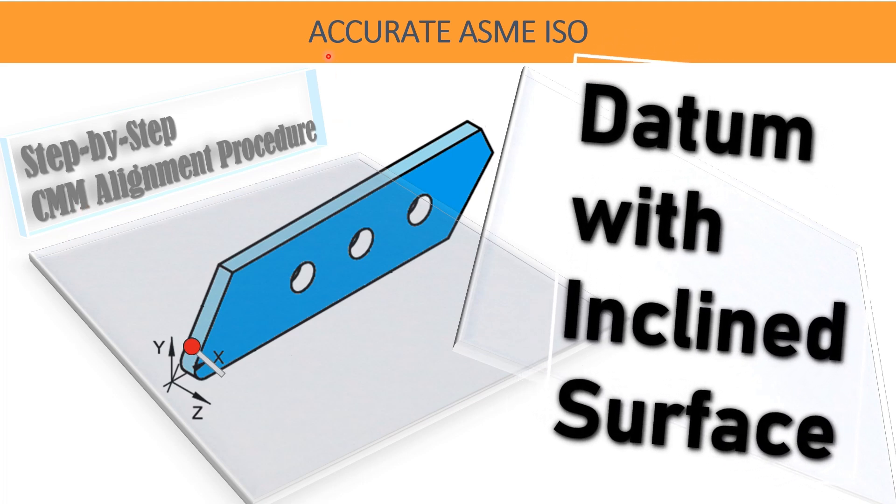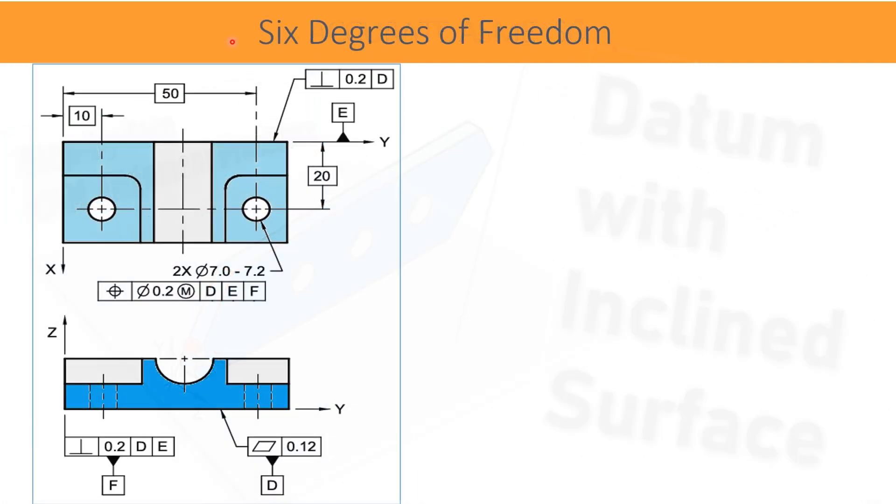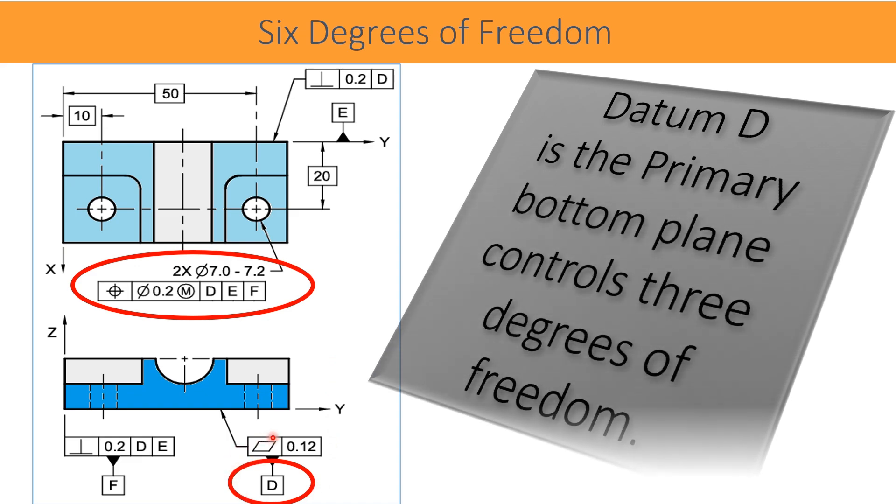Let us begin now. Very first, let us understand the normal datuming procedure when all three datum features are perpendicular to each other. In the given example, position of two holes applied with datum system D, E, and F. Datum D is the primary bottom plane and it controls three degrees of freedom.